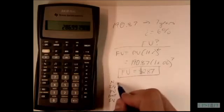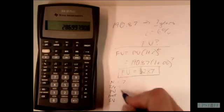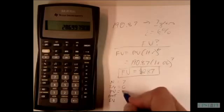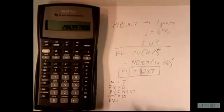Our n here is going to be 7. i over y is going to be 6. Our present value is going to be 190.87. Our payment is going to be 0, and that means our future value is what we're solving for.